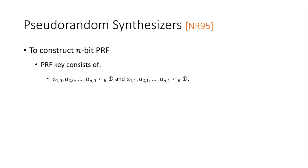Naor and Reingold showed that if we have a secure pseudorandom synthesizer, we can construct a low-depth PRF as follows. Suppose we want to construct an N-bit PRF, where N is a power of two. The PRF key consists of 2N random elements from the domain of the synthesizer: A_{1,0} through A_{N,0} and A_{1,1} through A_{N,1}.